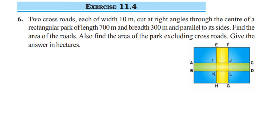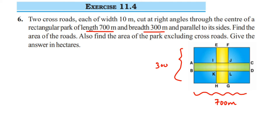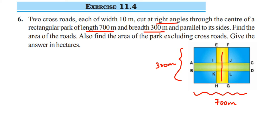What is given: the park has length 700 meter and breadth 300 meter, so the shape is a rectangle. There are two crossroads crossing at right angles — that means they are perpendicular, making a 90-degree cross like a plus sign, as you can see in the figure. The width of each road is 10 meter.